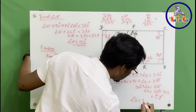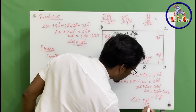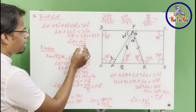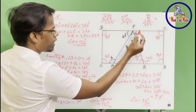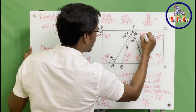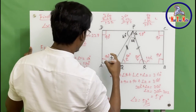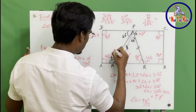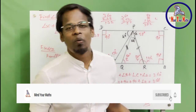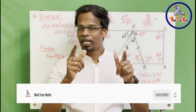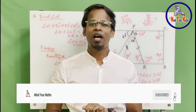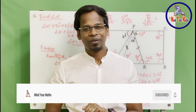Angle z equals 58 degrees — that is the answer. We found angle x equals 132 degrees and angle z equals 58 degrees. You can write both in the diagram. Geometric problems are always manageable. If you still have any questions, please leave them in the comments and I will address them in the next video. Thanks for watching.